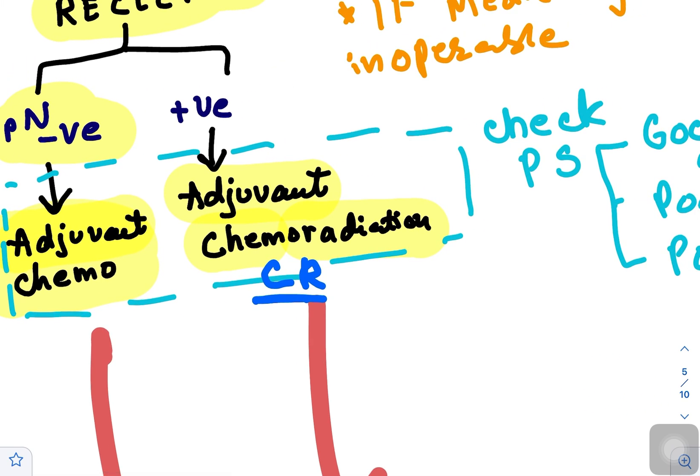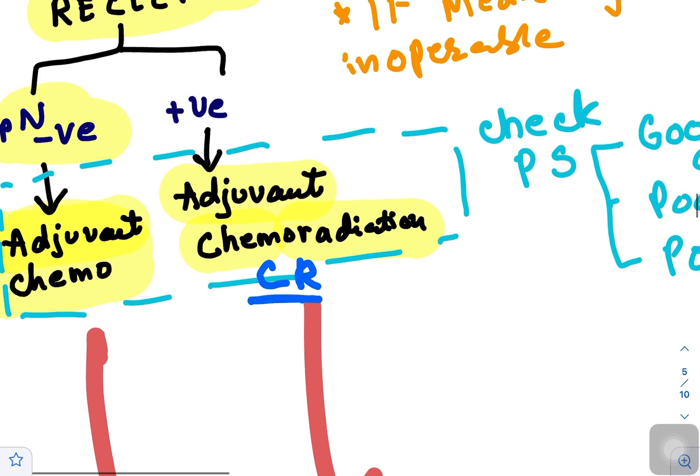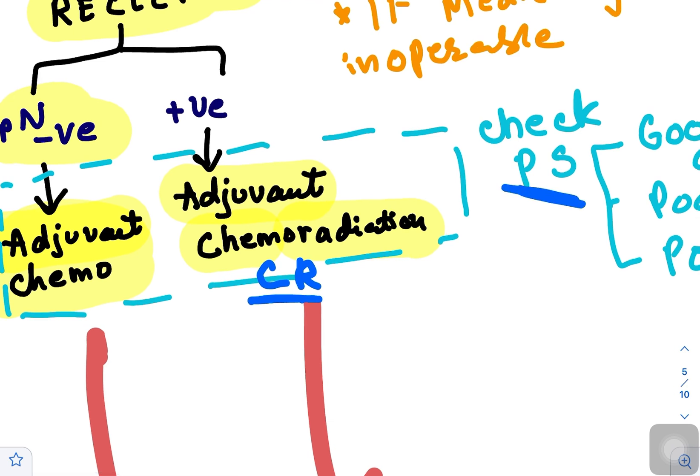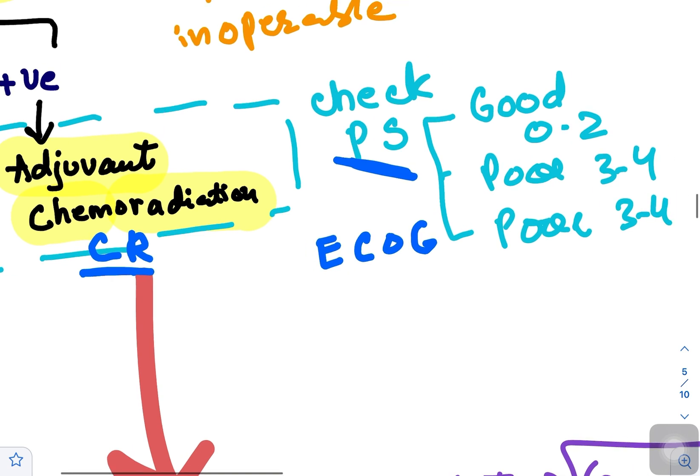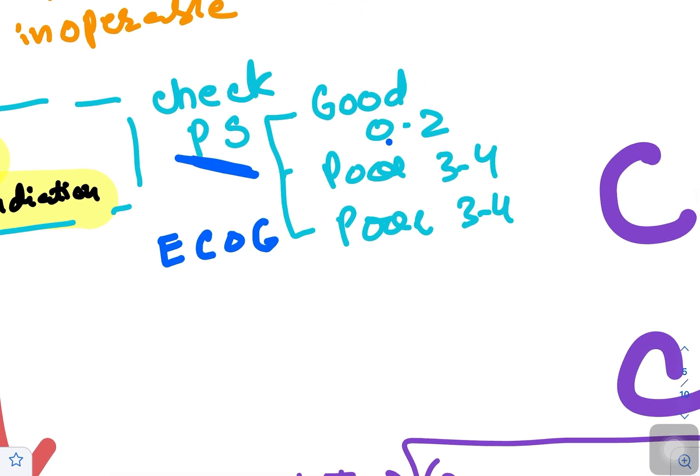Before deciding patient for chemoradiation or chemotherapy, check the performance status of patient - ECOG or WHO performance status. If it is good (0 to 2), send patient for chemotherapy or chemoradiotherapy. If poor status because of cancer itself, send for sequential chemoradiotherapy. If poor performance status is because of other comorbid conditions, decide for best supportive care and individualized targeted supportive therapy.